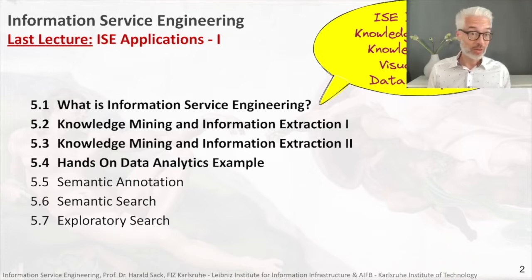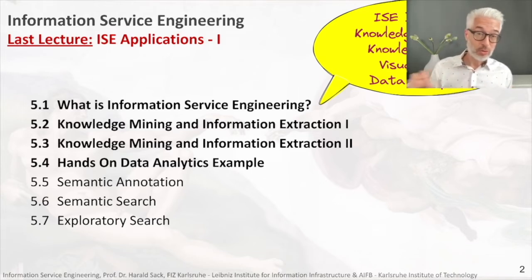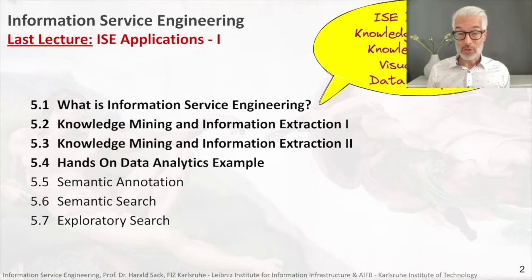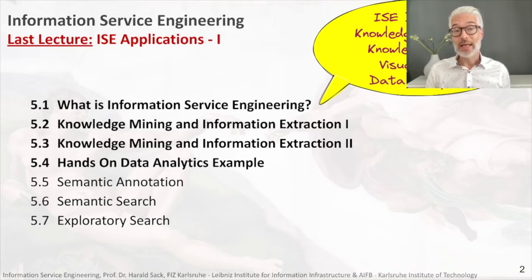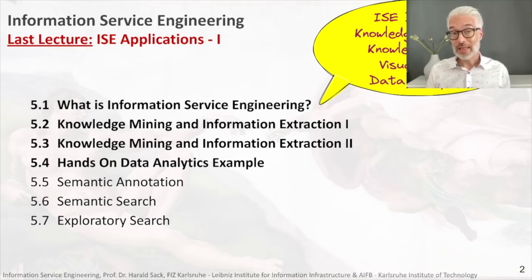Then we had the question: how do we get from data to knowledge? Raw data alone is more or less useless — you can't put it in perspective, it's not related to anything else. We have to come up with a process that transforms data first into information by putting it in perspective with other data, then into knowledge by finding out about the principles of how things are interconnected, and ultimately into wisdom where we can do predictions about the future. This process is referred to as knowledge mining or knowledge discovery.